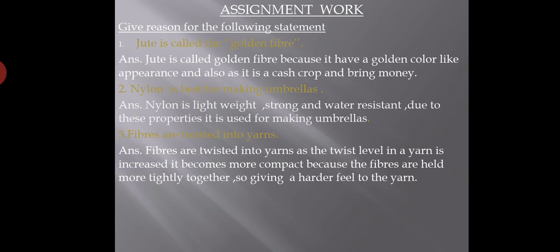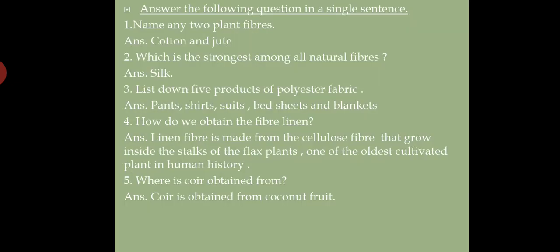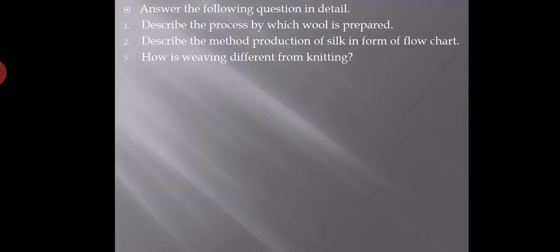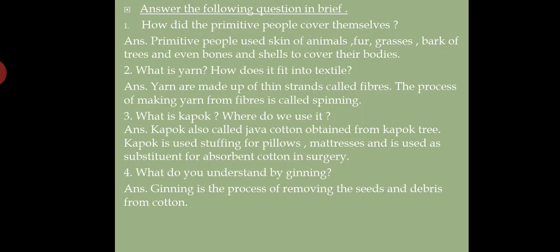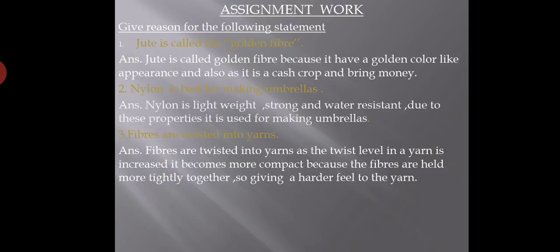Here is your assignment work. I hope you all have understood the chapter. If you have any doubts, keep them noted for the online class when I will clear all doubts. The assignment includes short answers, one-word answers, give-reasons questions, and three long questions: describe the process by which wool is prepared; describe the method of production of silk in the form of a flow chart; and how is weaving different from knitting. Notes are available with detailed answers. You have to write the three long answers yourself.